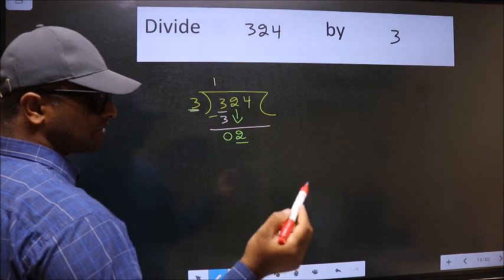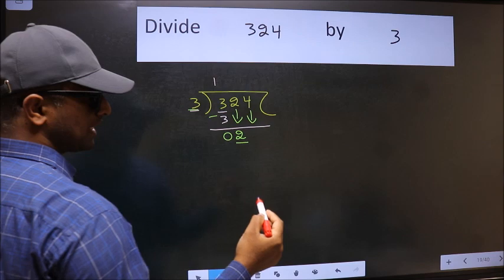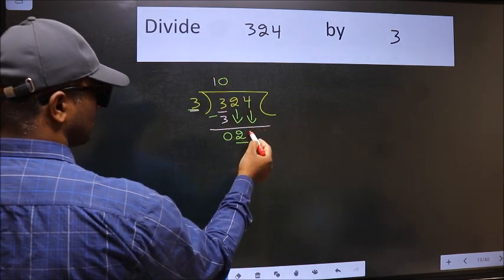So we should bring down the second number. And the rule to bring down second number is we should put 0 here. Then only we can bring this number down.